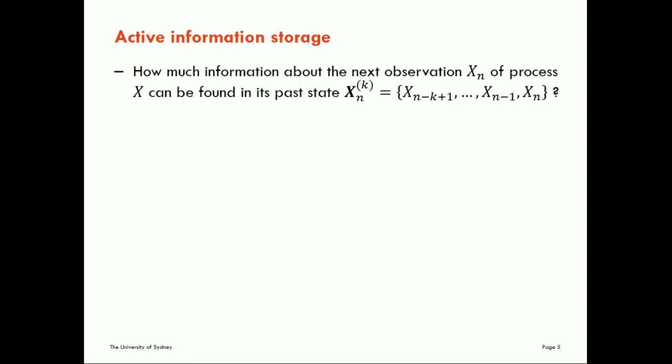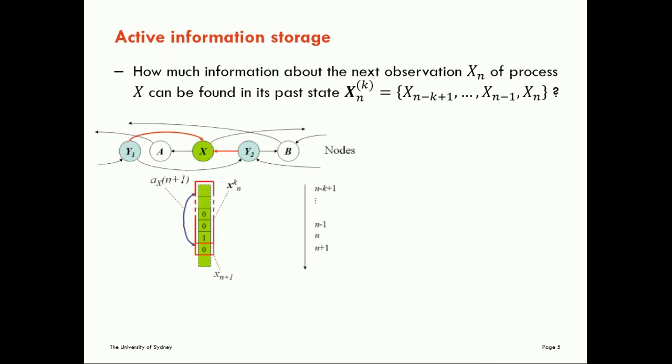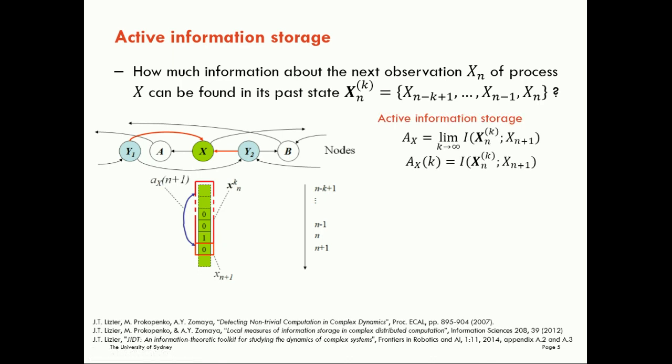Let's come now to our primary measure for information storage, and this is the active information storage, which asks how much information about the next observation of our time series process can be found in its past state, or how much will we model as having come from its past state. We can draw this diagrammatically, and look then at the past state, that block vector of the past state of the variable and the next value here. The active information storage is simply a mutual information between that past block and the next value. It's a very simple measure.